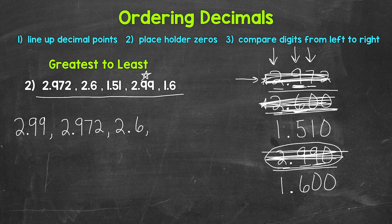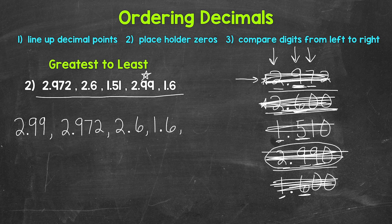Looking at the ones place, we have a one and a one. So let's move over to the tenths place. We have a five and a six. Six is greater than five, so that's what comes next: one and six tenths. Let's cross that off. We only have one left now: one and 51 hundredths. So that is last, and now we are in order from greatest to least.